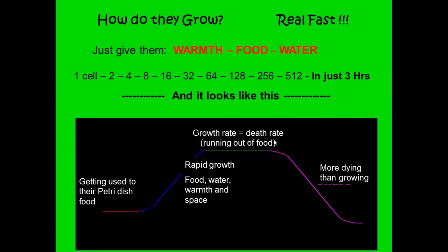As mentioned previously, bacteria require warmth, food, and water to grow. Bacteria grow by dividing and making copies of themselves. Starting from a single bacterium that finds a food source, it multiplies to produce two cells, then four, then eight, sixteen, thirty-two, sixty-four, and so on. This graph shows the growth rate of a bacterial colony, illustrating that they increase at an exponential rate — doubling very quickly so that numbers can grow rapidly.